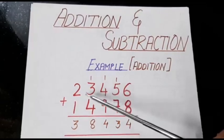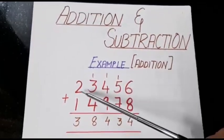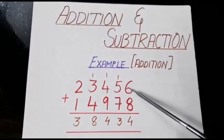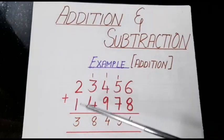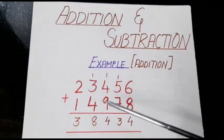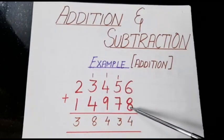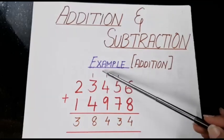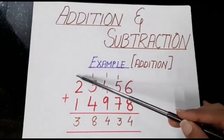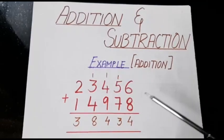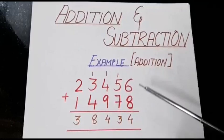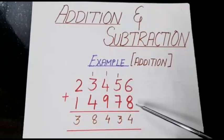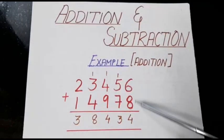The number is 23,456 plus 14,978. If you want, you can write the place values: unit, tens, hundred, thousand, ten thousand and so on. The simple way to add is that we will start from behind, i.e. from the units place.